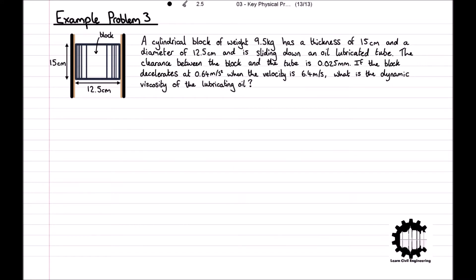For the third example problem, we have a cylindrical block of metal that weighs 9.5 kilograms. The block has a thickness of 15 centimetres and a diameter of 12.5 centimetres, and it is sliding down an oil lubricated tube, as we can see in the diagram. The clearance between the block and the tube is 0.025 millimetres. If the block decelerates at 0.64 metres per second squared when the velocity is 6.4 metres per second, what is the viscosity of the lubricating oil?